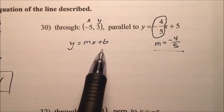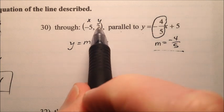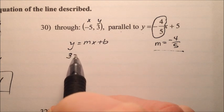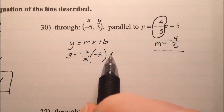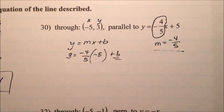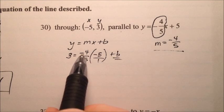So we begin with y equals mx plus b, so the 3 will go in for our y, our m is negative 4 fifths, our x is a negative 5, and then plus b. And since we're going to be multiplying these fractions, I'll put it over 1.